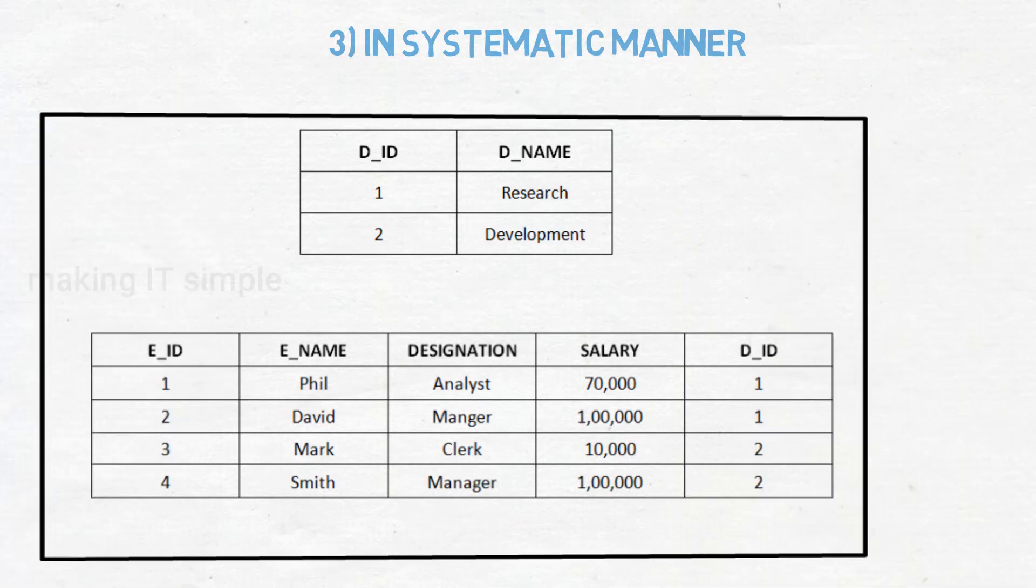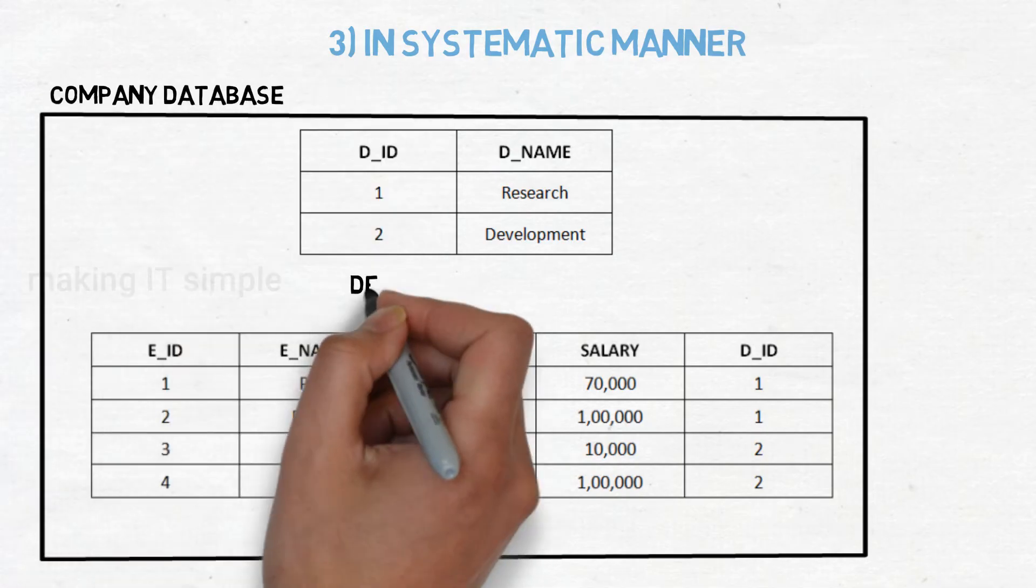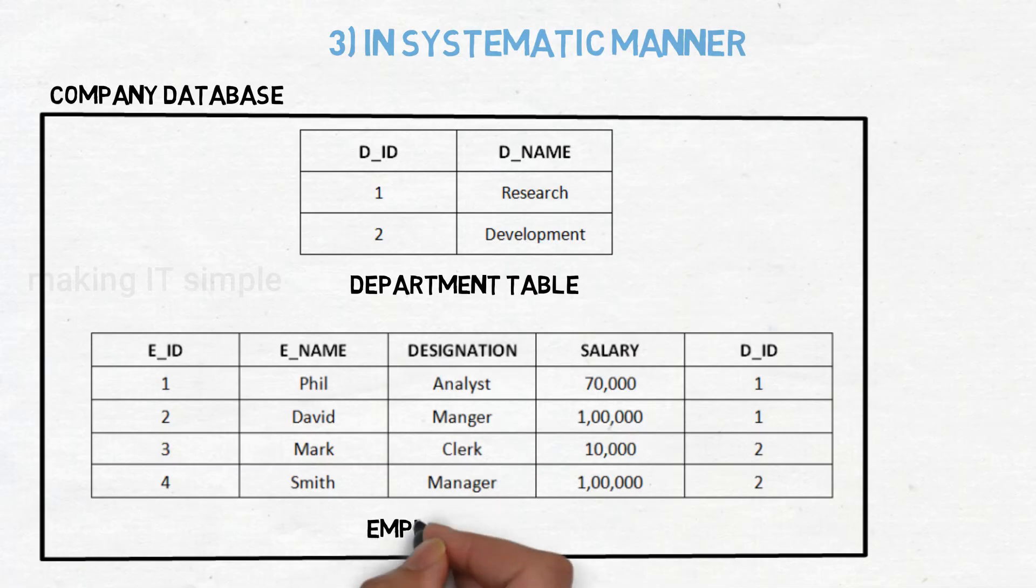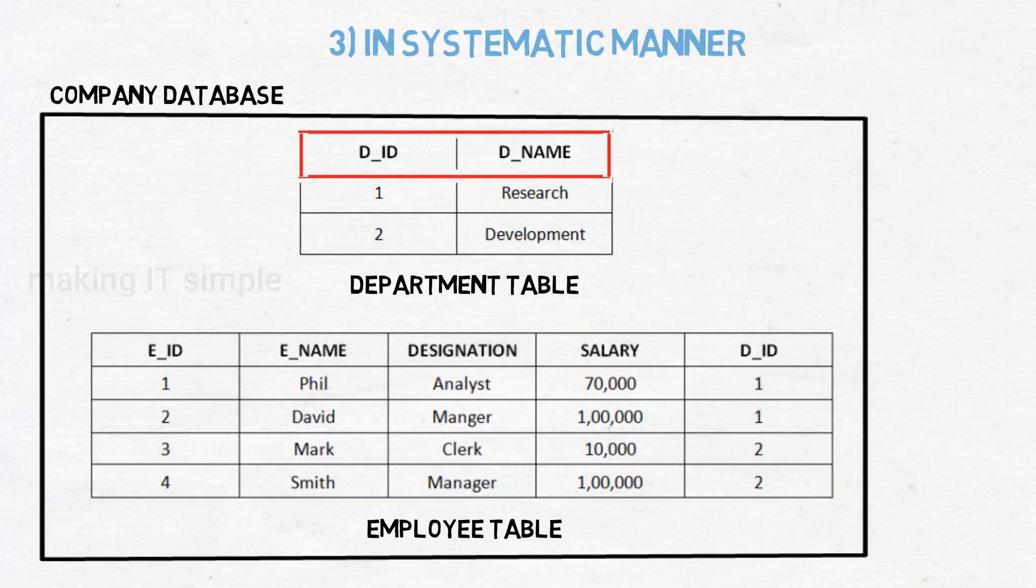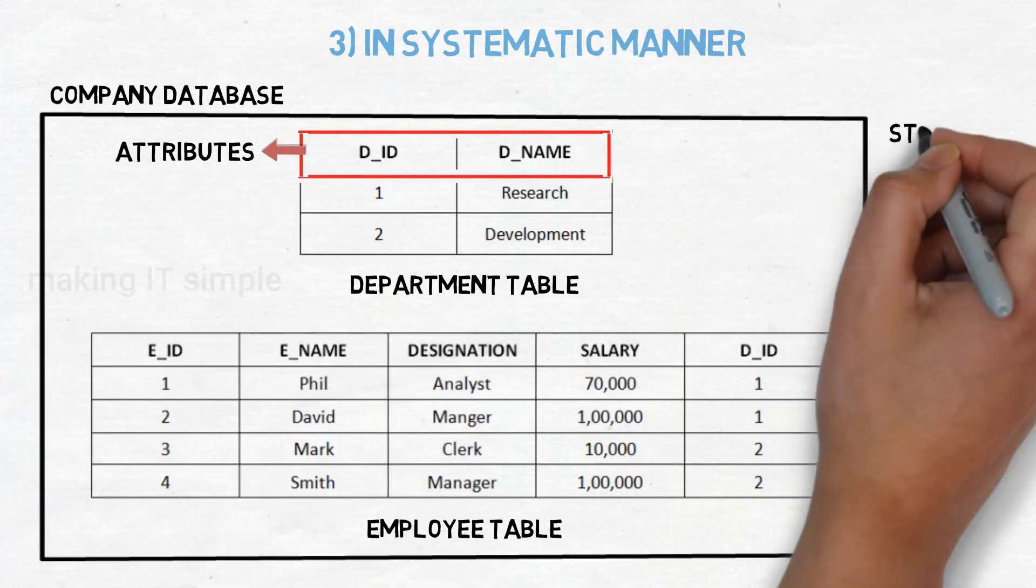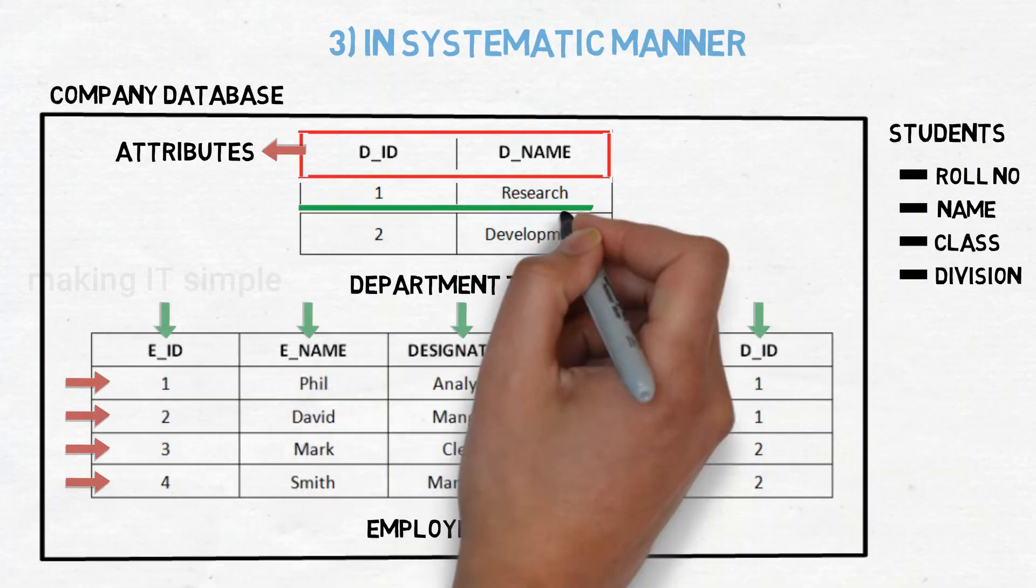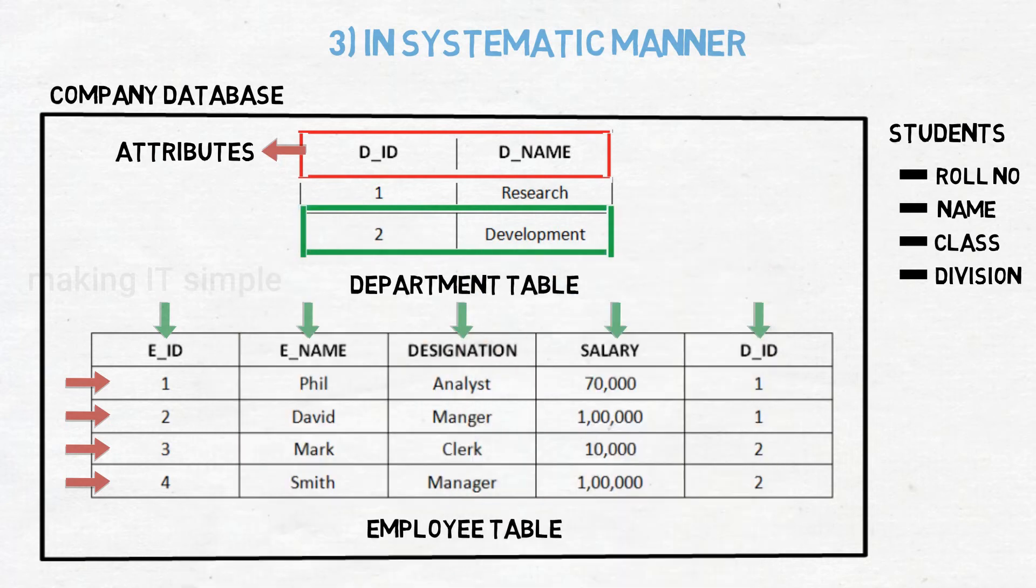So in this example we have considered a small database of a company. There are two tables present in it. One is department table and another one is an employee table. These are the attributes of the table. For example if we make a table of students then roll number, name, class, division will be its attributes. These are the rows of table. Each row is one individual record. These are the columns of the table. One individual record in table is also called as tuple.